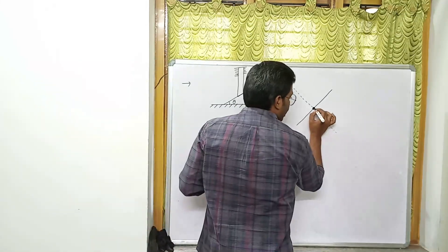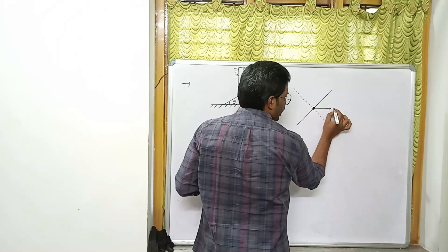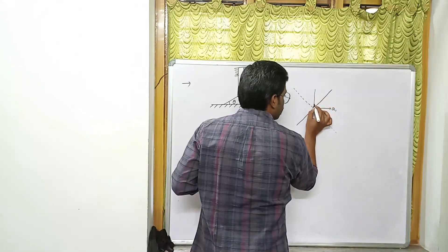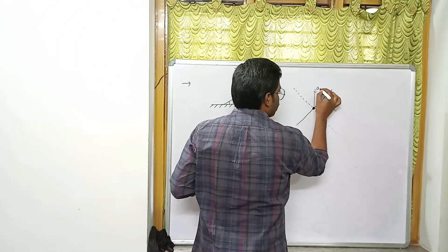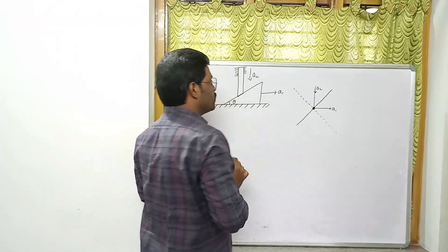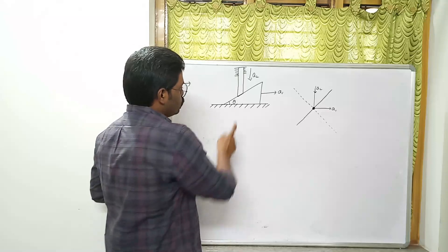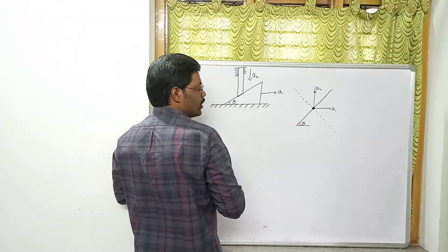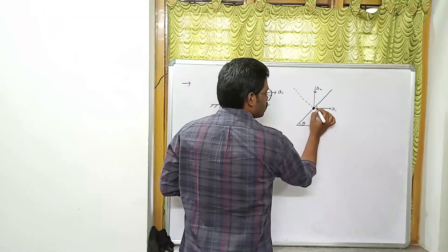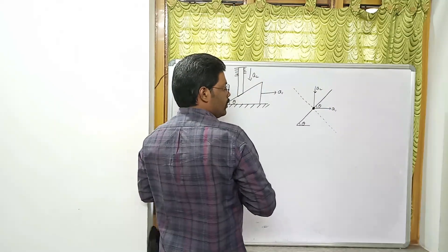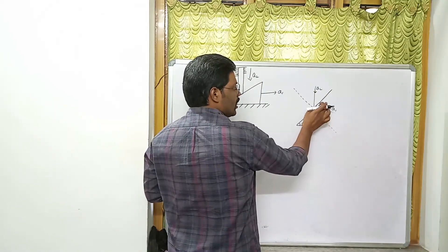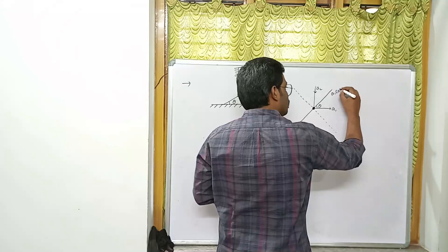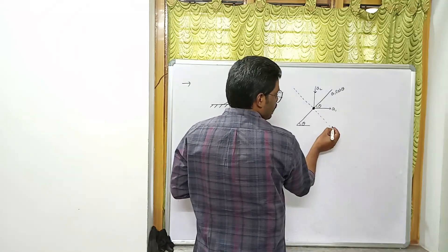After drawing the normal line, identify the accelerations. The acceleration of the wedge is a1, and the acceleration of the rod is a2 vertically downwards. Since the wedge makes an angle of theta with the surface, here also the angle is theta. So a1 resolved along the common tangent gives a1 cosθ, and along the normal gives a1 sinθ.